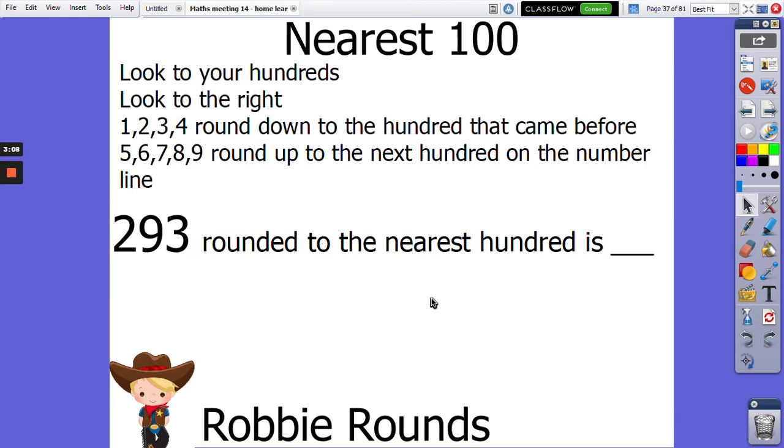Okay, rounding now to the nearest hundred. I want everyone to join in the rhyme, nice and loud. Look to your hundreds, look to the right. 1, 2, 3, 4, round down to the hundred that came before. 5, 6, 7, 8, 9, round up to the next hundred on the number line. Were you singing nice and loud? Excellent, I bet you were.